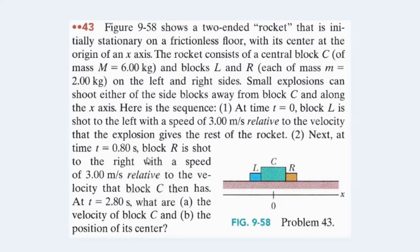Next, at time 0.8 seconds, another explosion separates R and C so that R moves to the right of C at three meters per second. So R is moving, with respect to C, three meters per second to the right.